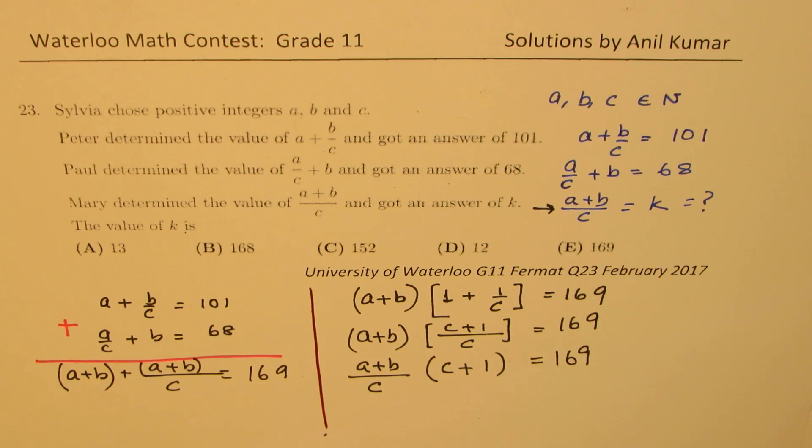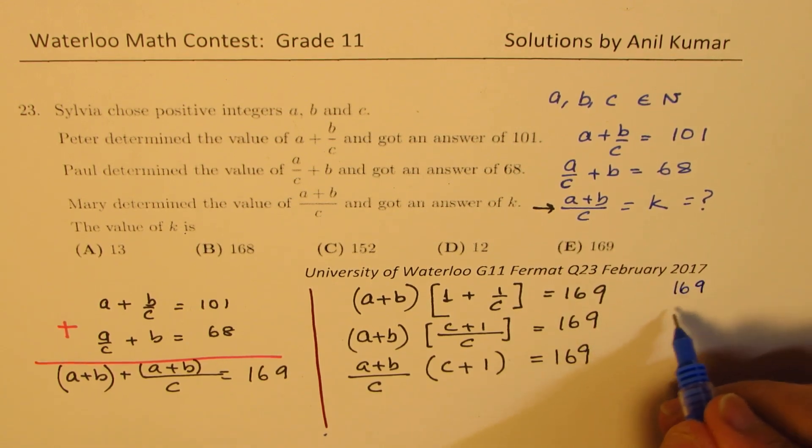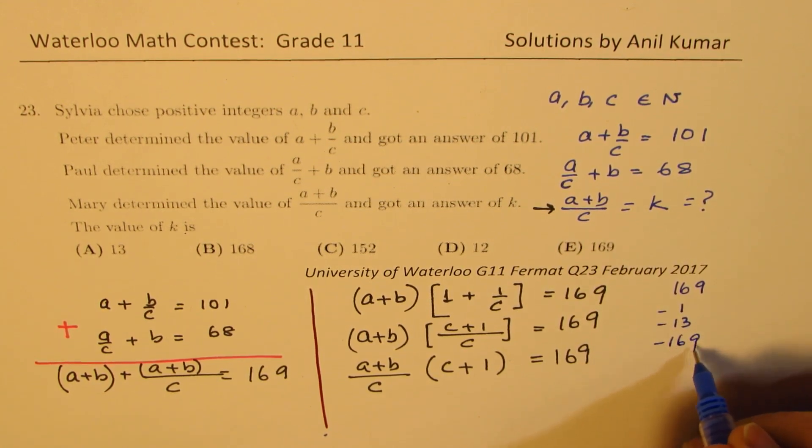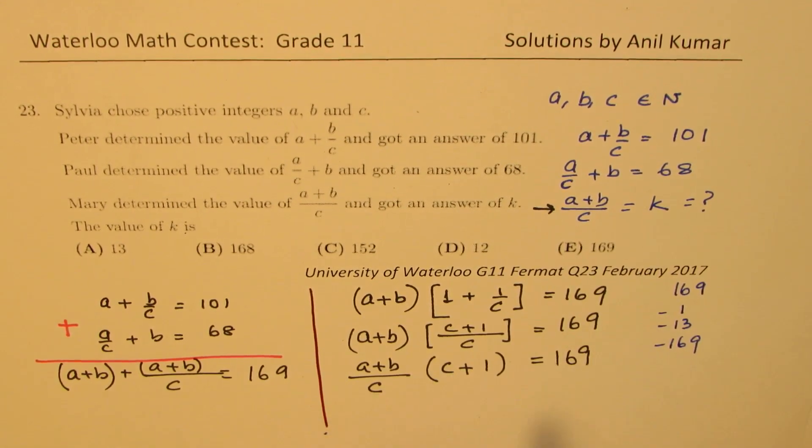Now 169 is a very beautiful number which has only factors of what? One of the factors is 1, 13 times 13, and 169. So it has only three factors. So when you multiply, these are the only three options. Well, one is not given to you. 13 and 169, both are given to us. One of them is the correct option. And we know C cannot be 0. It has to be greater than 0.